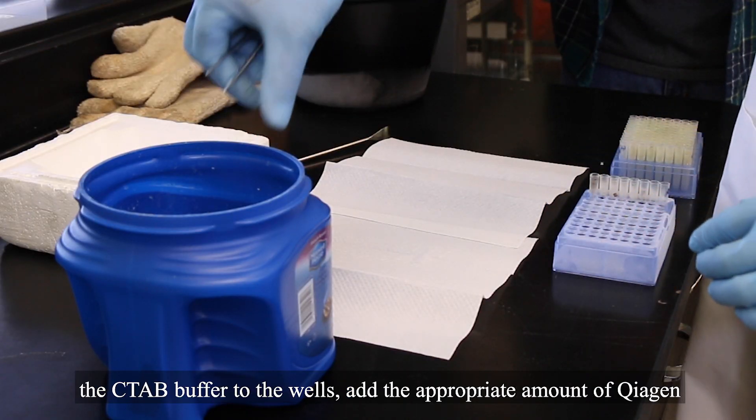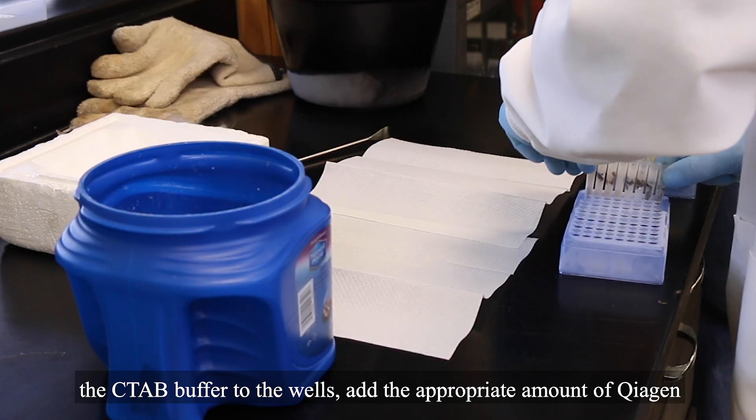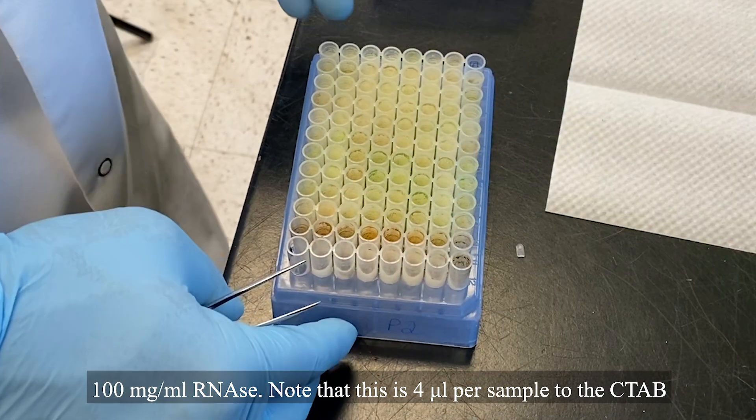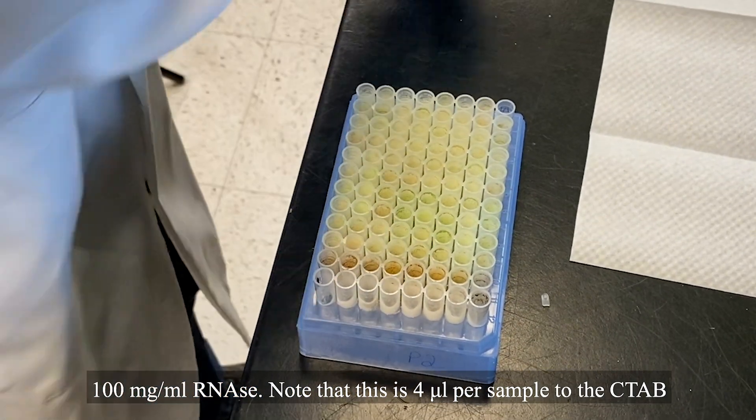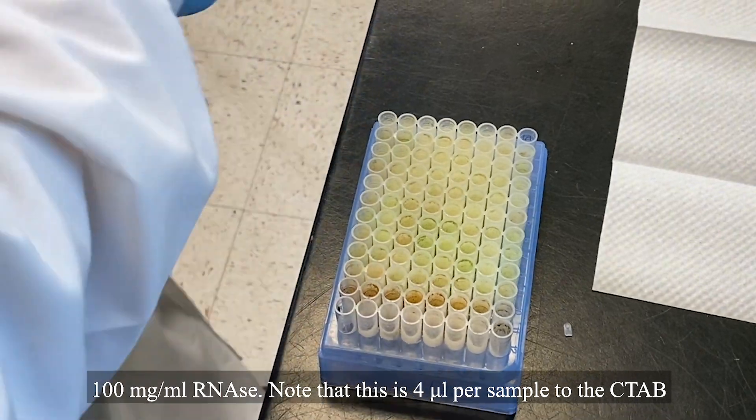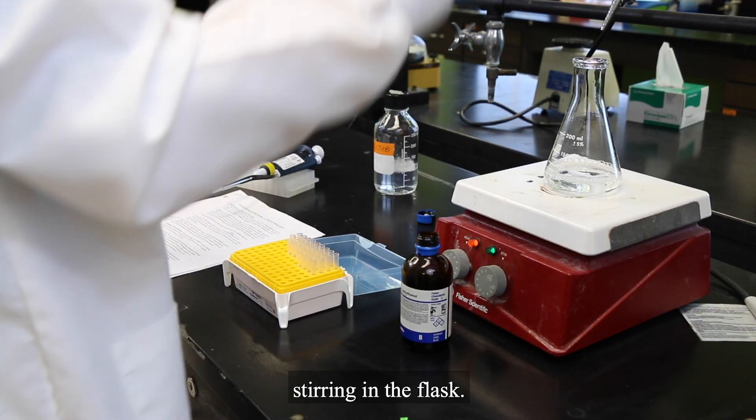just before you add the CTAB buffer to the wells, add the appropriate amount of Kiagen 100 milligrams per mil RNase. Note that this is 4 microliters per sample to the CTAB stirring in the flask.